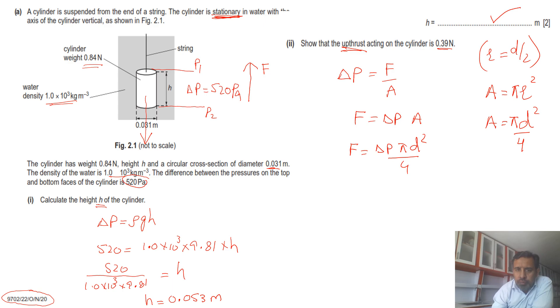Now we have to substitute the values: 520 × π × (0.031)² divided by 4. After calculating all these values using the calculator, the answer is 0.39 Newton.